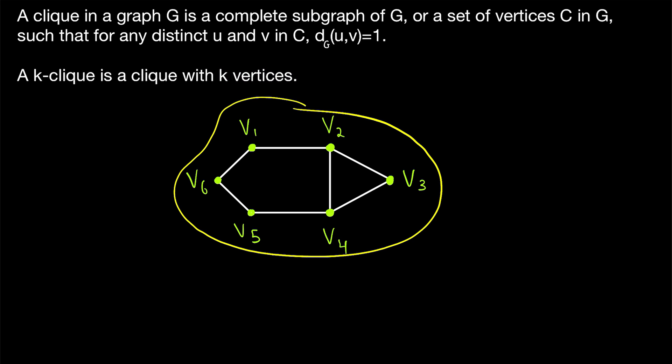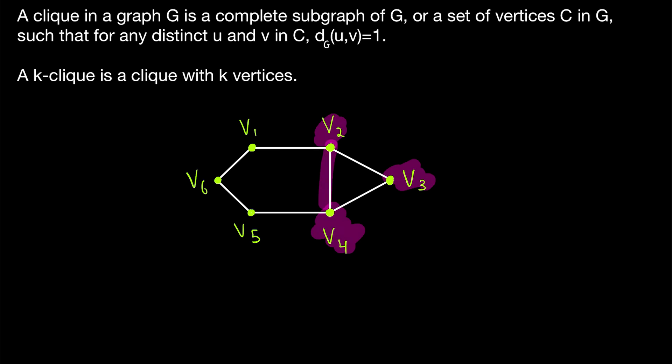Looking at this graph here for an example, the vertices v2, v3, and v4 make up a click. They are three vertices that are all adjacent to each other. Or we may also call the whole subgraph including them a click because it is a complete subgraph. It's a click with three vertices, so we might call that a three-click.